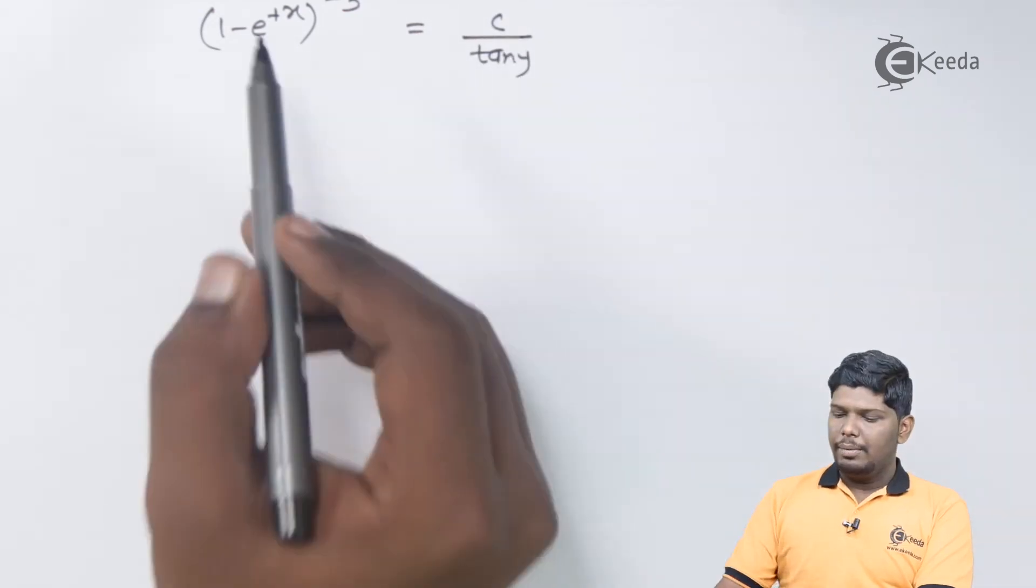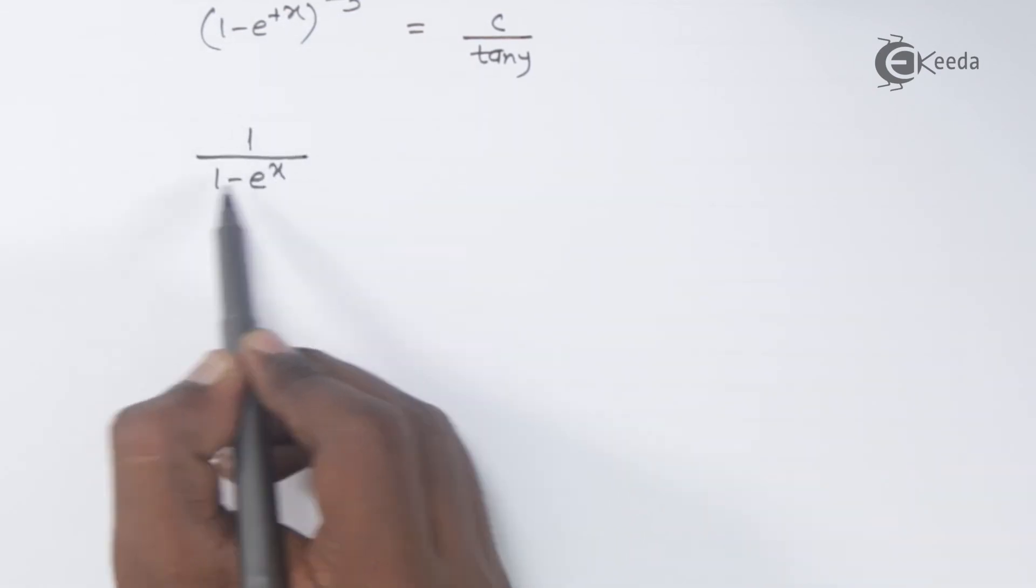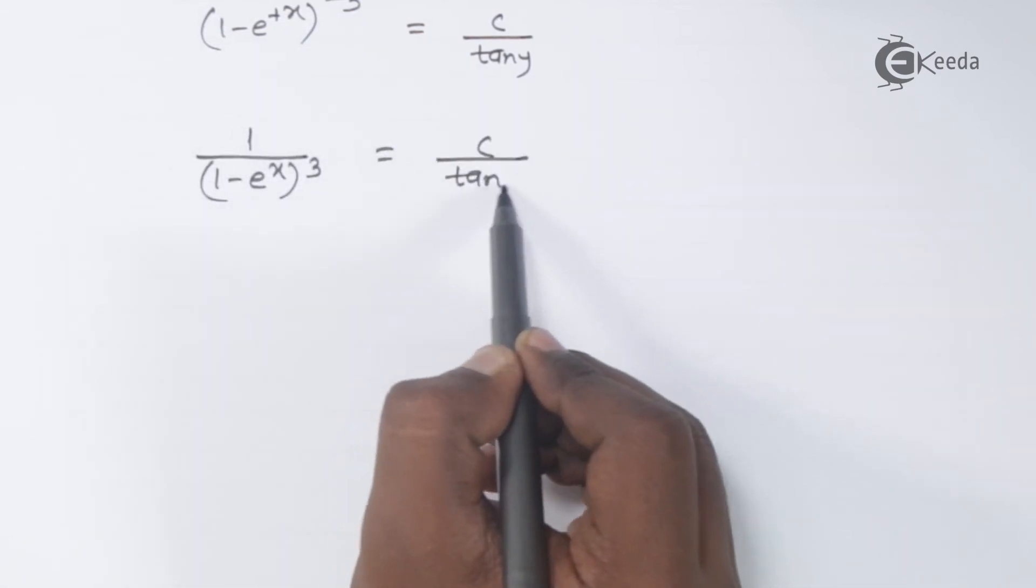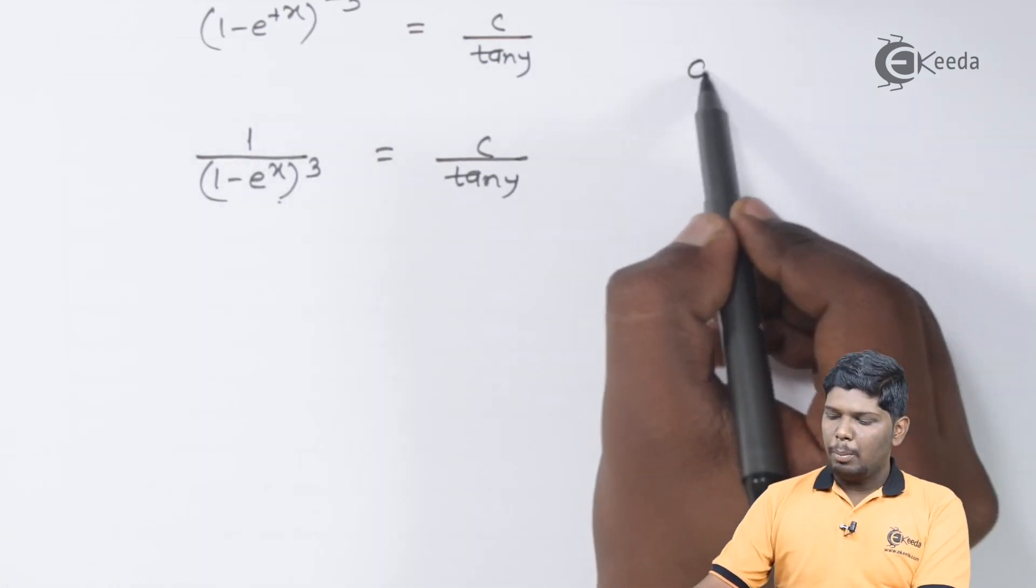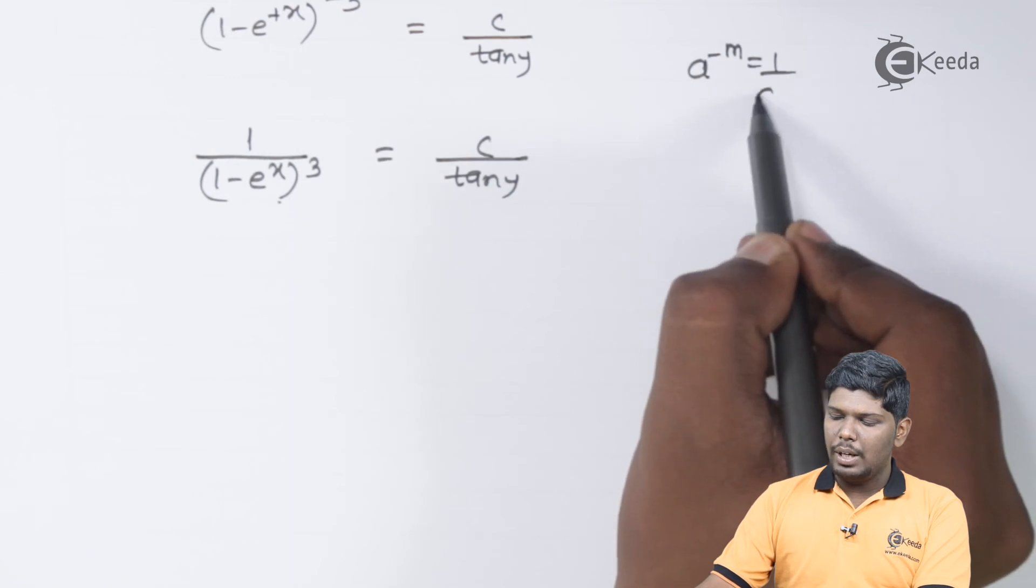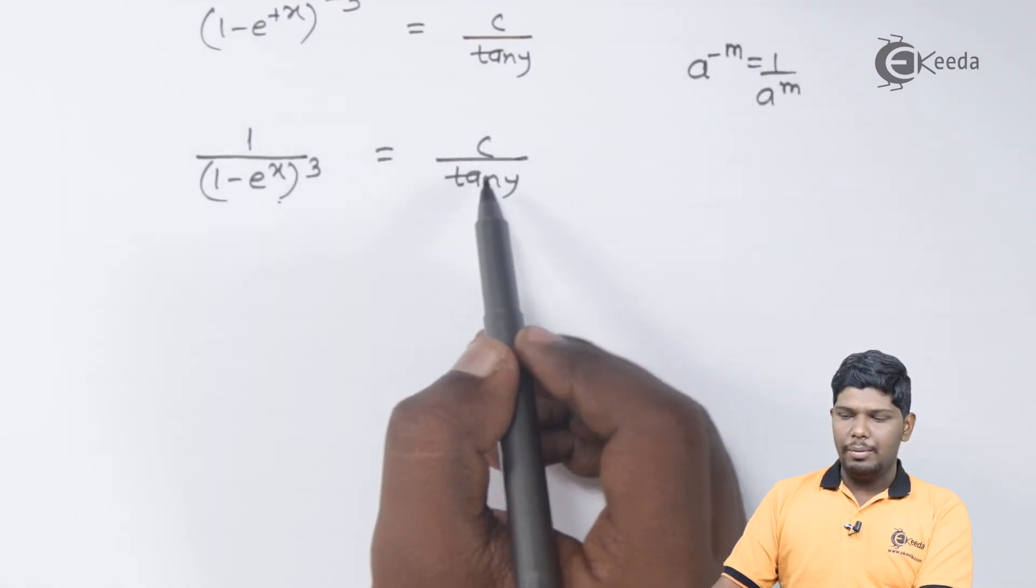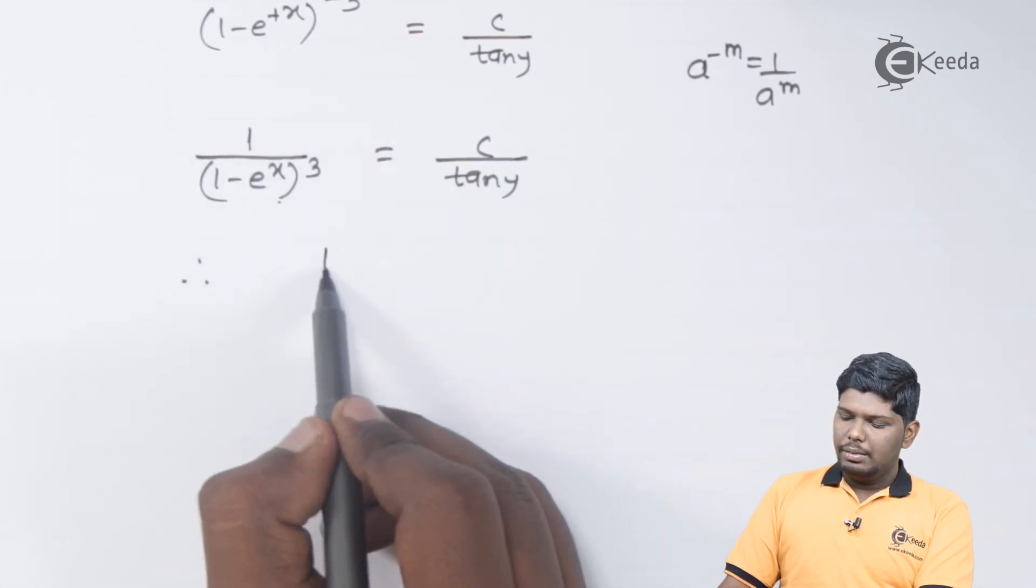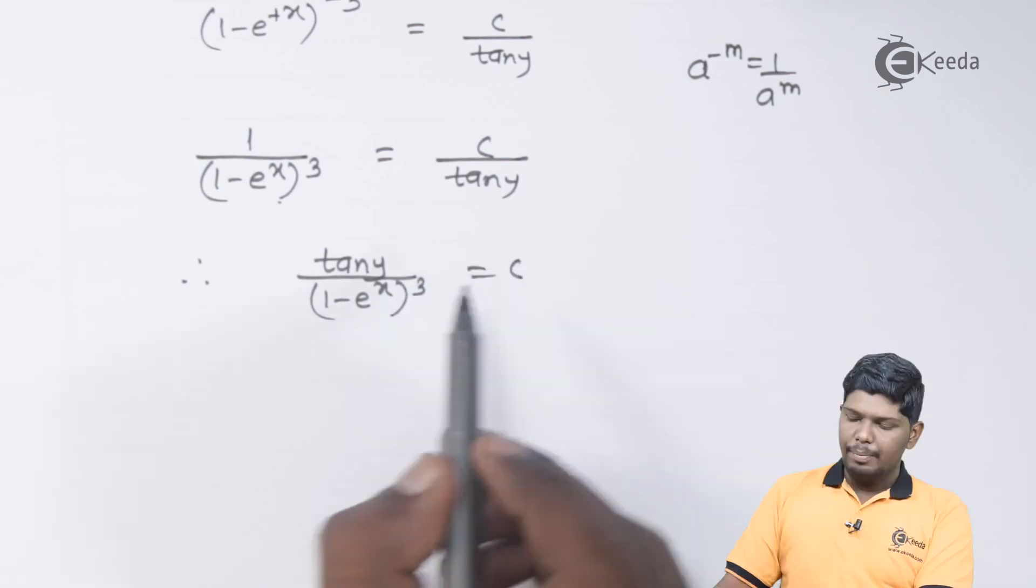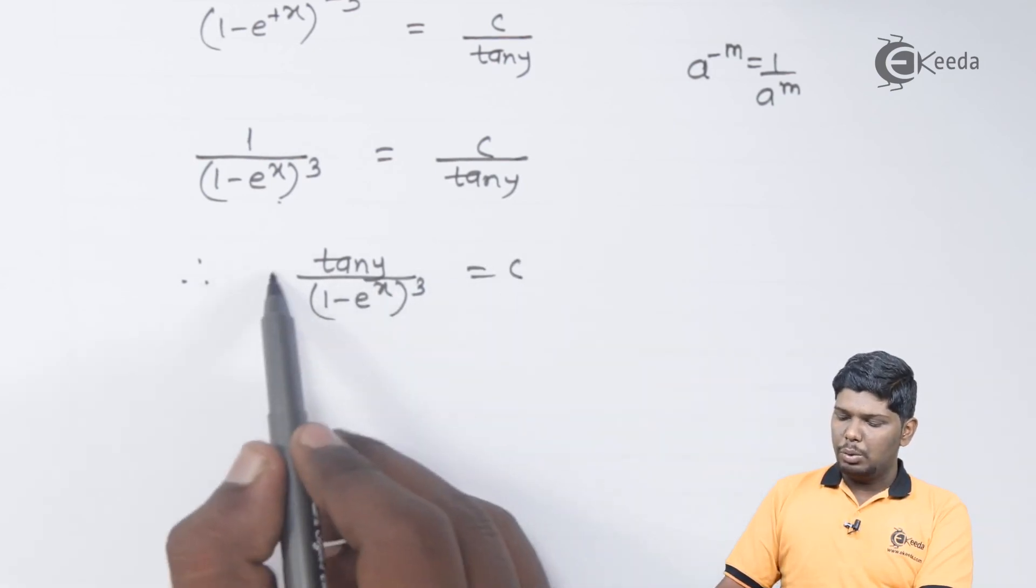On further solving, 1 minus e raise to x raise to minus 3 can be written as 1 upon 1 minus e raise to x the whole cube. As the property goes, a raise to minus m is 1 upon a raise to m. And on the right hand side, we have c upon tan y. Taking tan y on the left hand side, we have tan y upon 1 minus e raise to x the whole cube is equal to c.